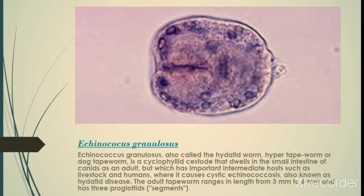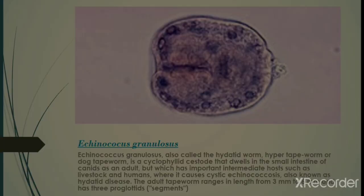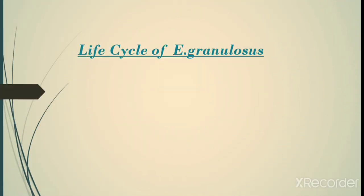Now we talk about Echinococcus granulosus. Echinococcus granulosus, also called the hydatid tapeworm or dog tapeworm, is a cyclophyllidean cestode that dwells in the small intestine of canids as an adult, but which has important intermediate hosts such as livestock and humans, where it causes cystic echinococcosis, also known as hydatid disease. The adult tapeworm ranges in length from 3 to 6 millimeters and has three proglottids.